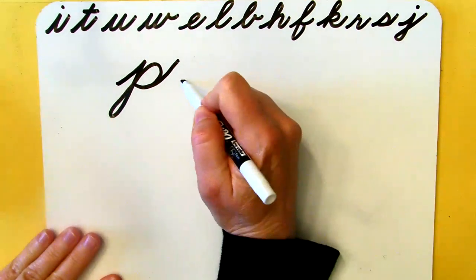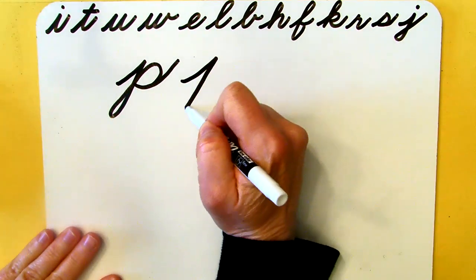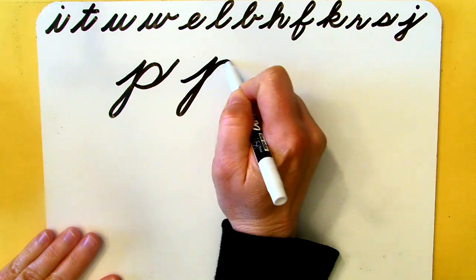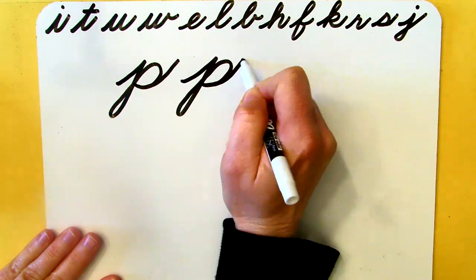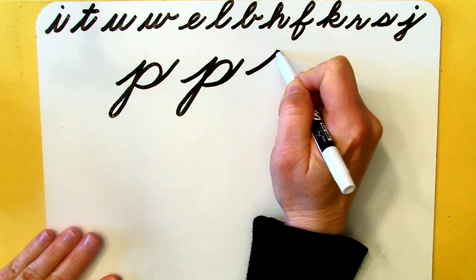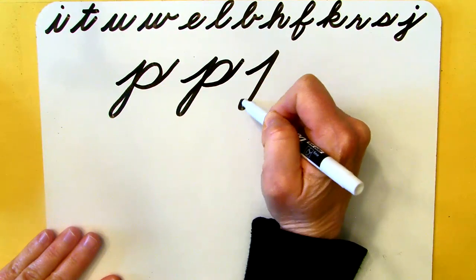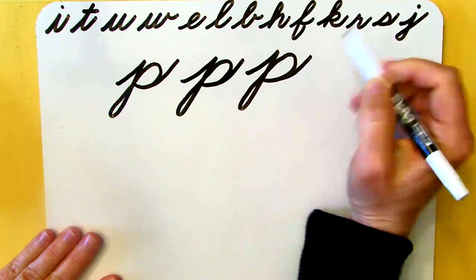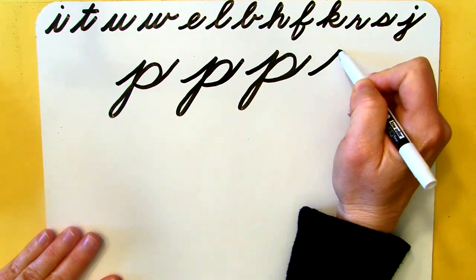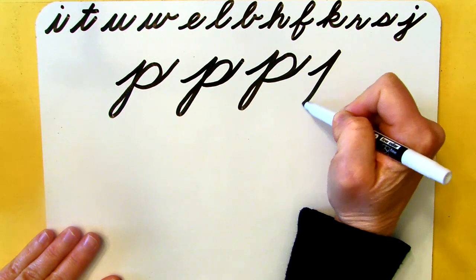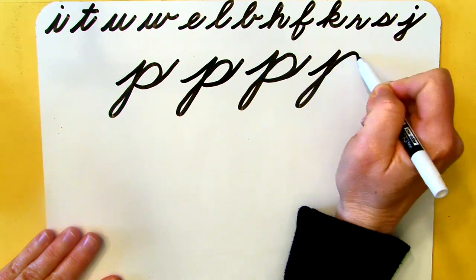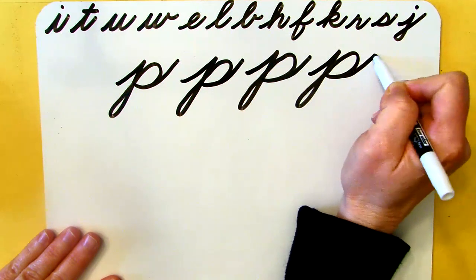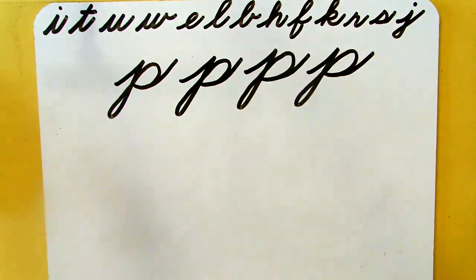Undercurve, slants to the basement, loops back, up and over curve, undercurve. Undercurve, slants to the basement, loops back, up and over curve, undercurve. Undercurve, slants all the way to the basement, loops back, up and over curve, undercurve. That's your lowercase P.